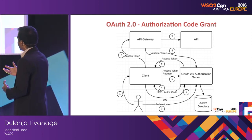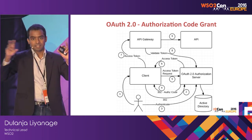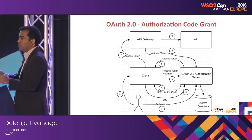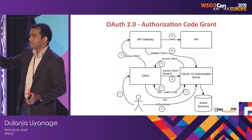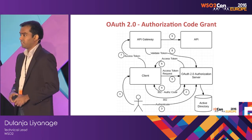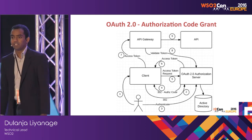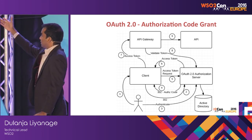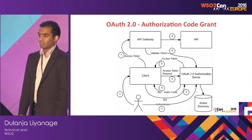Once the client gets the access token, it sends it to the API Gateway with the request in an HTTP bearer header. The API Gateway calls the authorization server to validate that token. The server confirms it is valid and may also provide additional information about the user to the API Gateway, so the gateway can do further fine-grained authorization if required — like XACML or any fine-grained authorization. Finally, if the token is valid, it allows the client to access the API on behalf of that user.